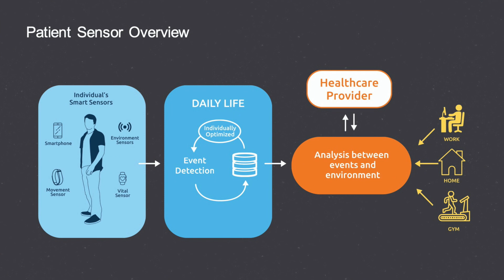As you look at a patient sensor overview, there are several things to think about: smartphones, sensors, vital sensors, and even environmental sensors to know what's going on. From there, you look at daily life — it learns, like the motor example — to event detection, then moves to optimizing how your daily life looks, and then those events flow into the environment and look at what you're doing specifically, eventually applying to the healthcare provider you're interfacing with.